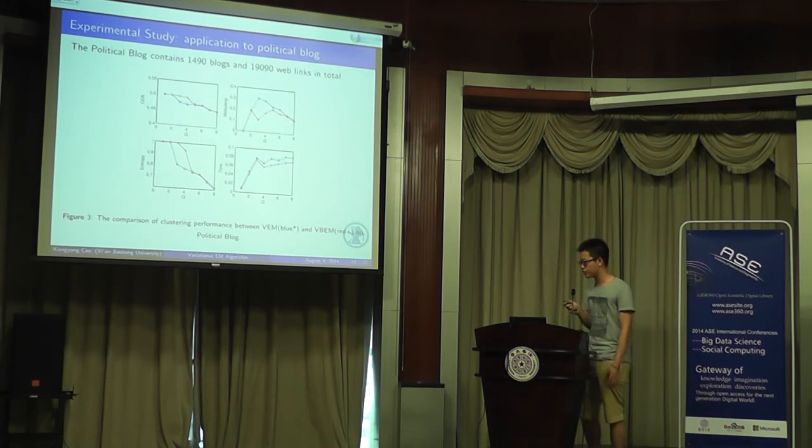After simulations, we use real data political blogs to compare both methods. The political blogs contain 1,419 blogs and 19,090 web links in total. These blogs have two labels: liberal and conservative. We regard these labels as the attributes. So P equals 1, only one attribute.